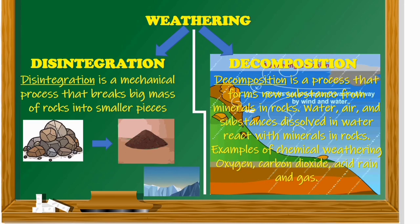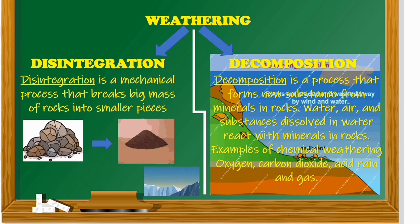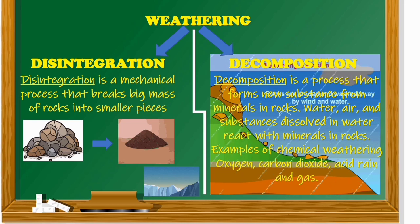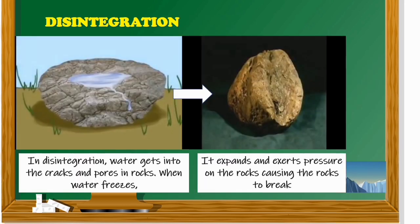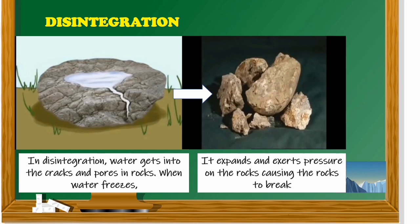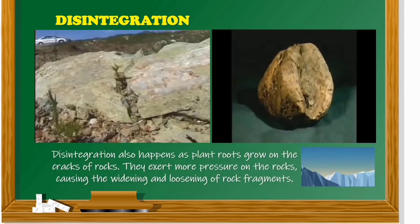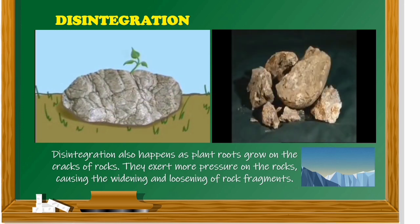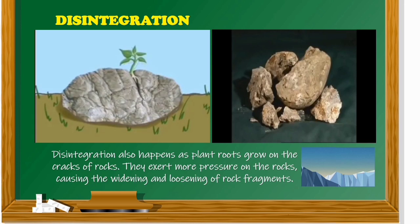Weathering includes disintegration and decomposition. Disintegration is a mechanical process that breaks big masses of rocks into smaller pieces, while decomposition is a process that forms new substances when minerals in rocks, water, air, and substances dissolved in water react with minerals in rocks. In disintegration, water gets into the cracks and pores in rocks. When water freezes, it expands and exerts pressure on the rocks, causing them to break. Disintegration also happens as plant roots grow in the cracks of rocks, exerting more pressure and causing the widening and loosening of rock fragments.